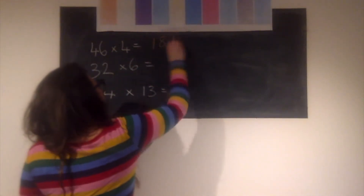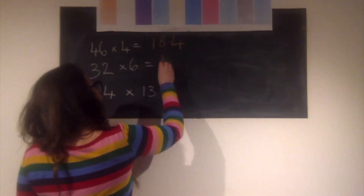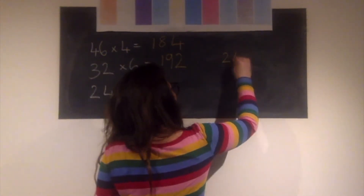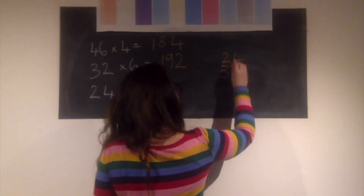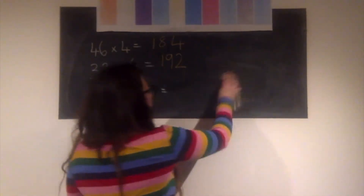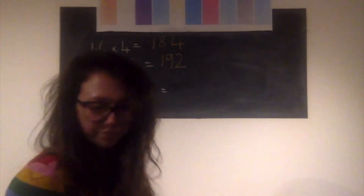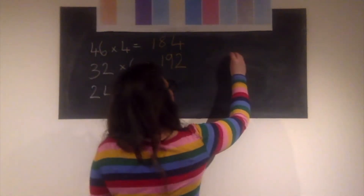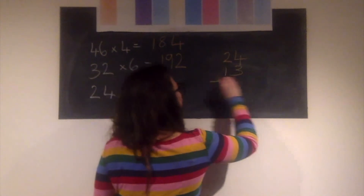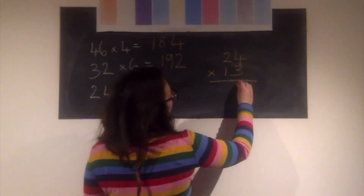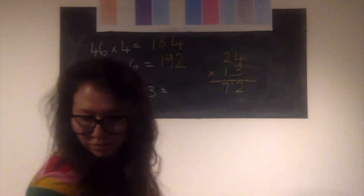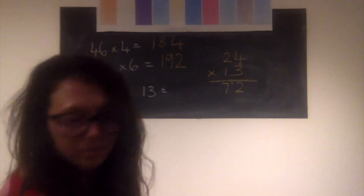Here are the answers for the first two: 46 times 4 is 184, and 32 times 6 is 192. Now for 24 times 13, I'm going to model it for you. We write them on top of each other in the correct place value, then start with 3 times 4 which gives us 12 — we carry the 10 — then 3 times 20 is 60, add the 1 gives us 70.